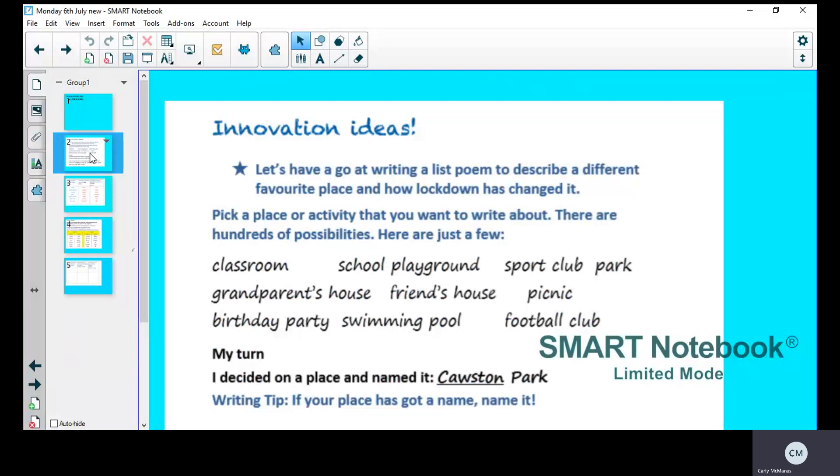Pick a place or an activity that you want to write about. There are hundreds of possibilities, here are just a few. On Friday you chose a place and you just wrote a little bit about it. You can change that if you want today, but whatever you choose today will be what you write about for your actual poem because we're in the planning stage now.